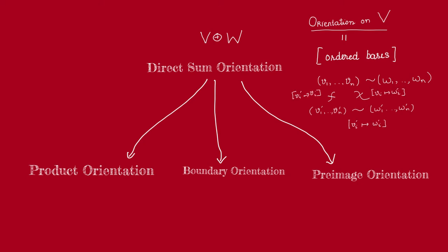Let's see why. The change of basis matrix between those two must be the composition of each change of basis matrix with the original. But both of those must have negative determinant, because they aren't equivalent to v1, ..., vn. And so their composition must have positive determinant. Thus, once we have fixed an ordered basis v1, ..., vn, there are just two equivalence classes: one consists of all bases equivalent to v1, ..., vn, and one consists of all those that are not.